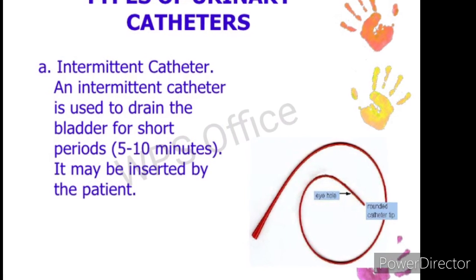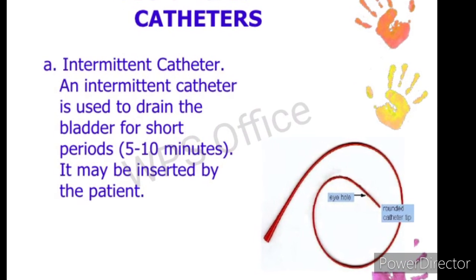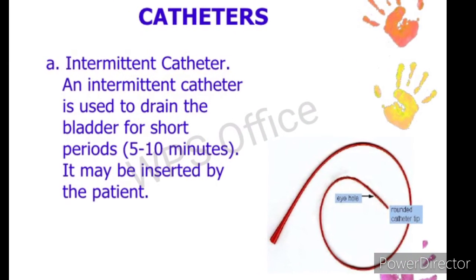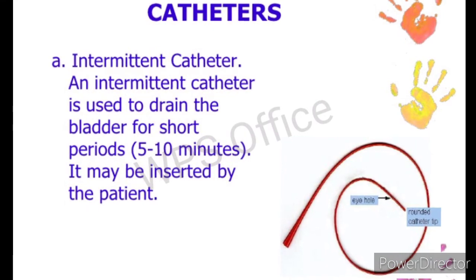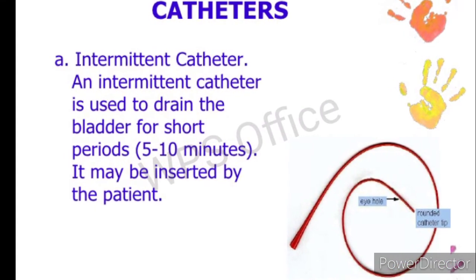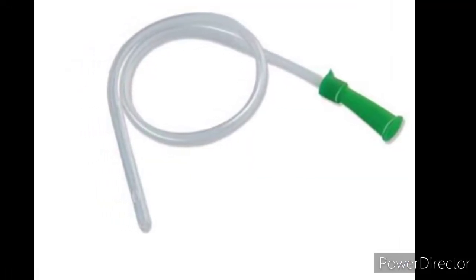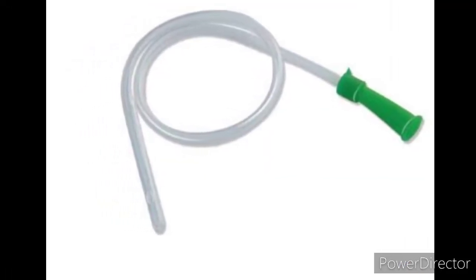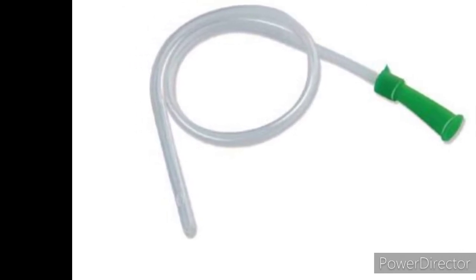There are three main types of catheter. The first is the intermittent catheter, which is used to drain the bladder for short periods — that is, 5 to 10 minutes. It may be inserted by the patient themselves.